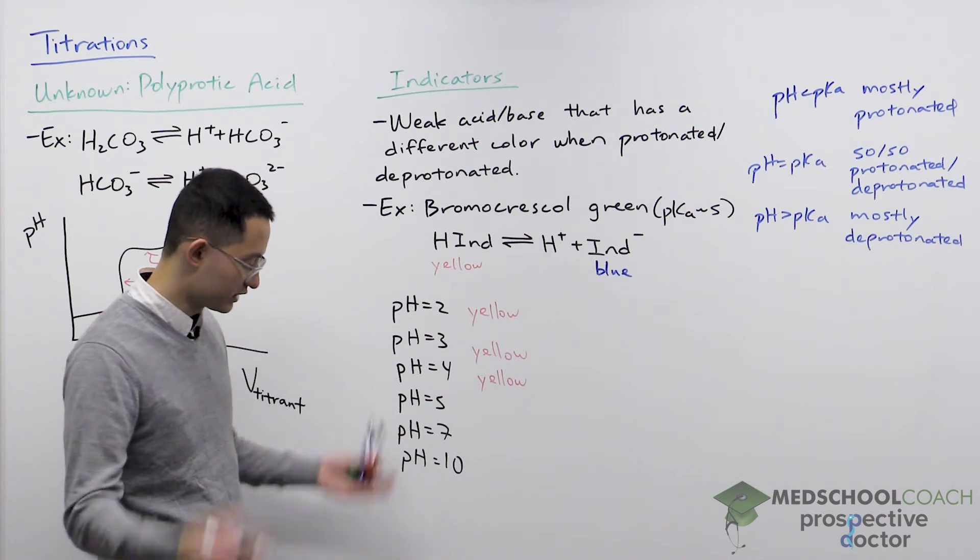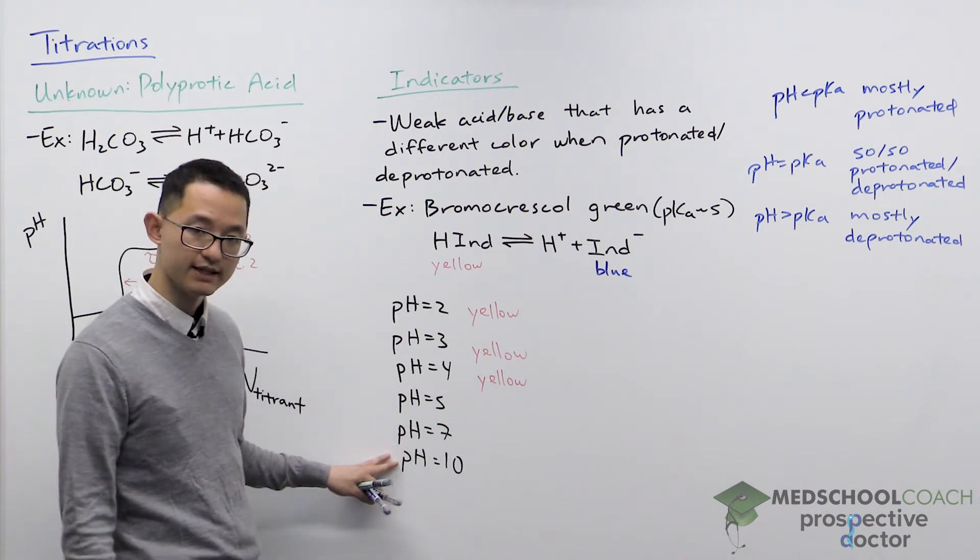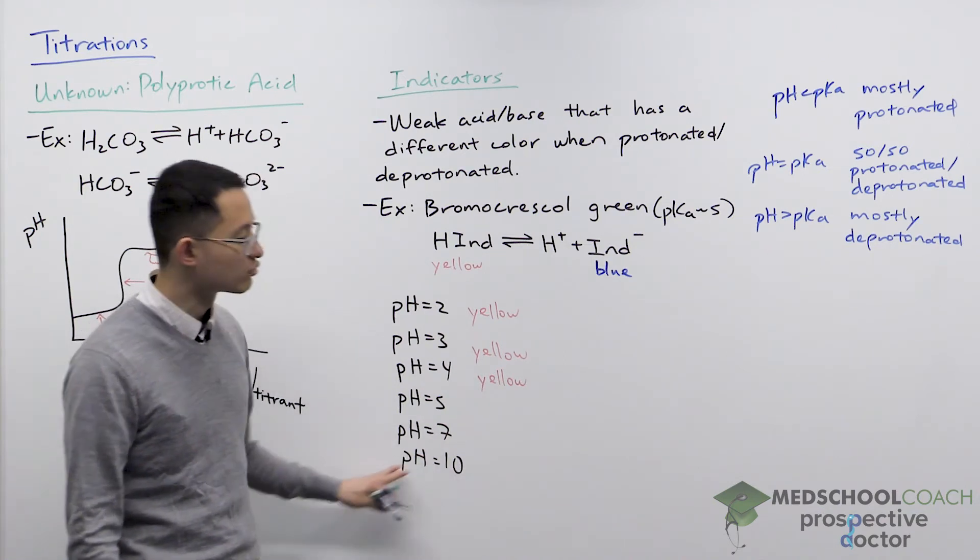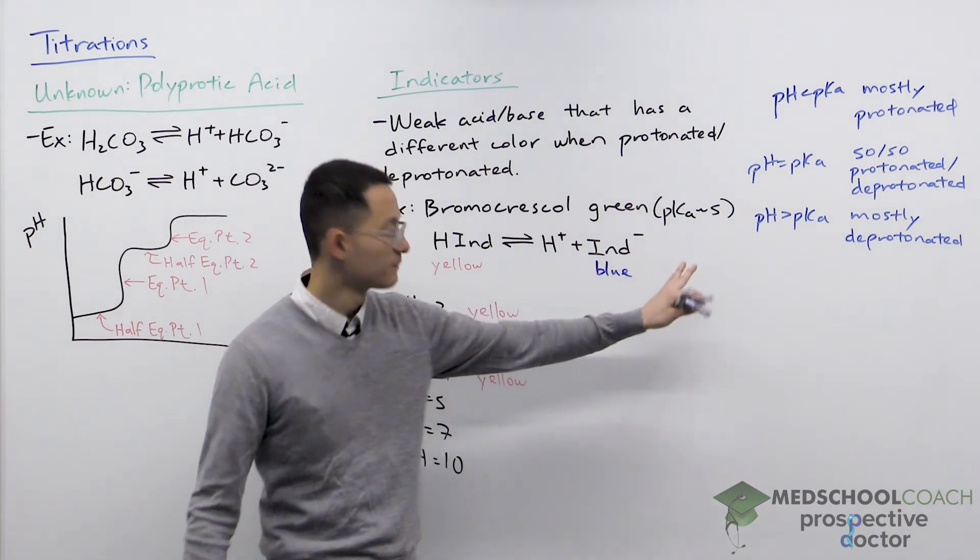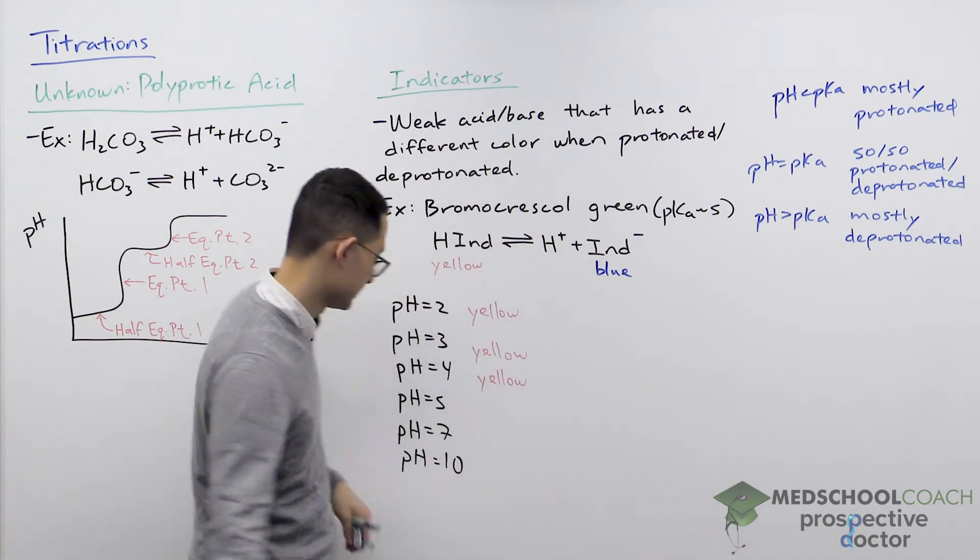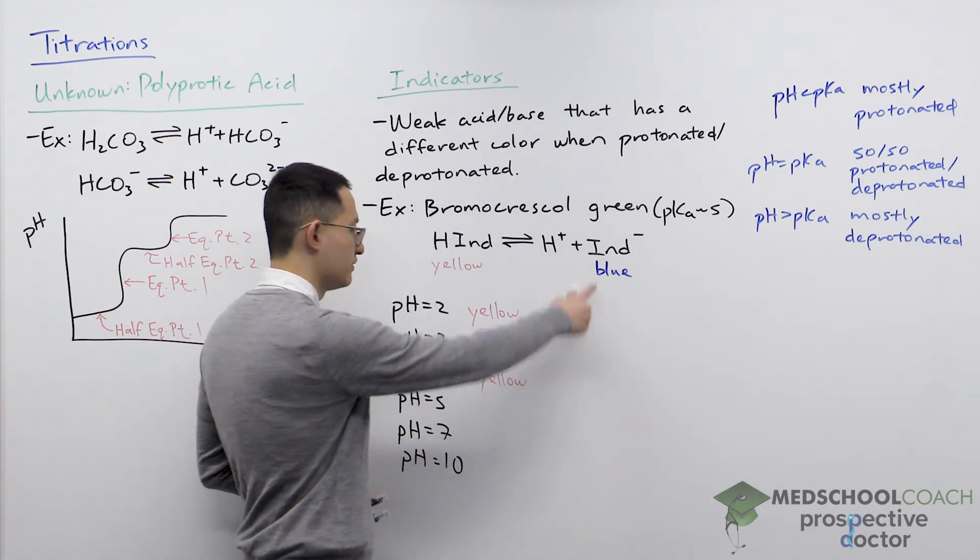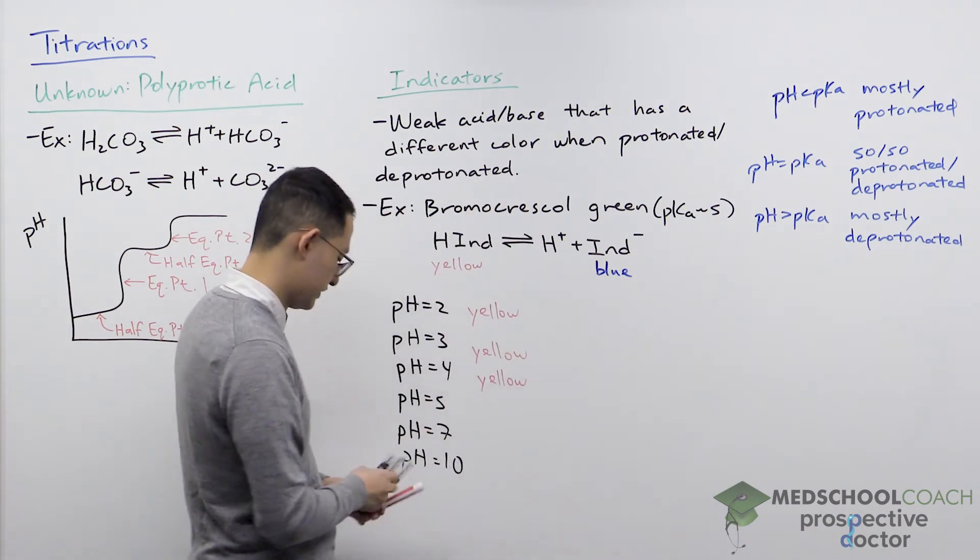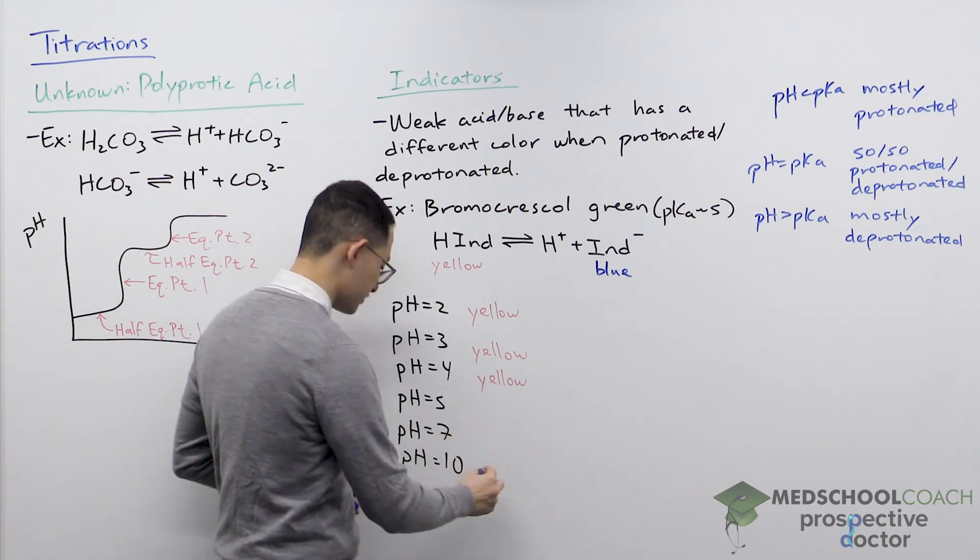But if we take a look at higher pH values, like a pH of 10, now the pH is greater than the pKa of 5. And when the pH is greater than the pKa, your molecule is mostly deprotonated. And when it's deprotonated, we know our molecule is blue, so now our solution should also be blue.